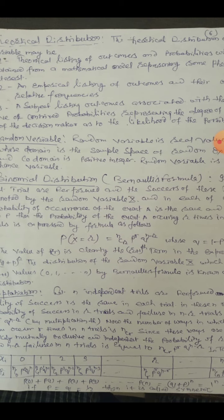And corresponding probability PI: NC0 × P^0 × Q^N, NC1 × P^1 × Q^(N-1), NC2 × P^2 × Q^(N-2), NC3 × P^3 × Q^(N-3), ..., NCR × P^R × Q^(N-R), ..., NCN × P^N × Q^0.